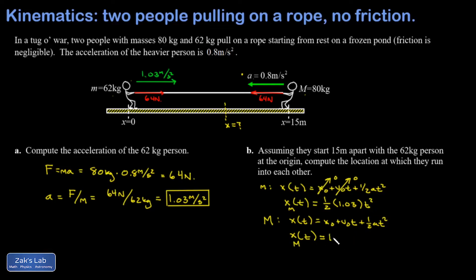It's given by an initial position of 15, and here's where the direction matters on the acceleration vector. I've got to put in a minus sign for that initial acceleration, so minus one half times 0.8 t squared.